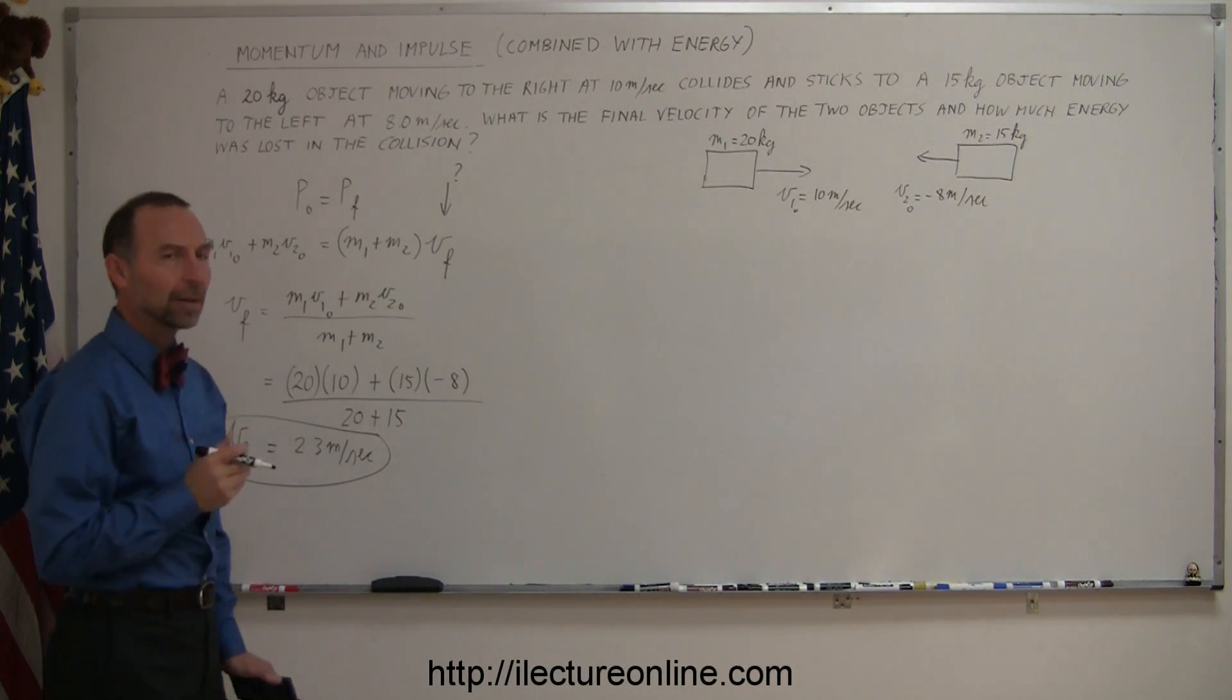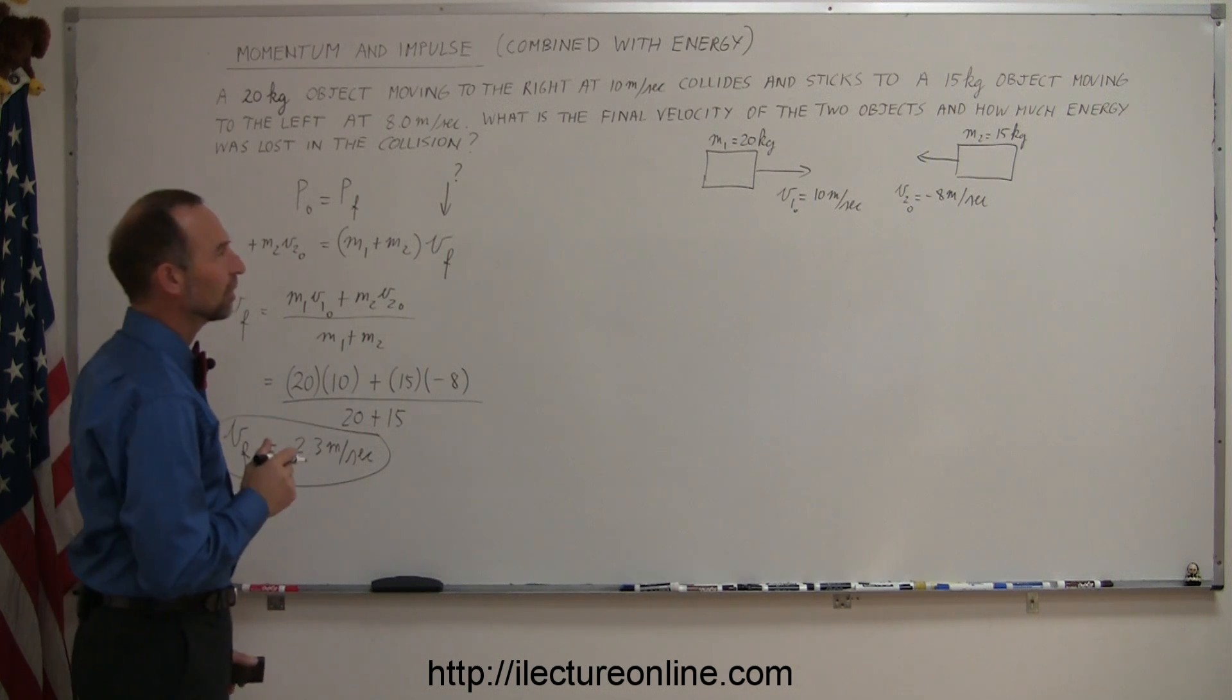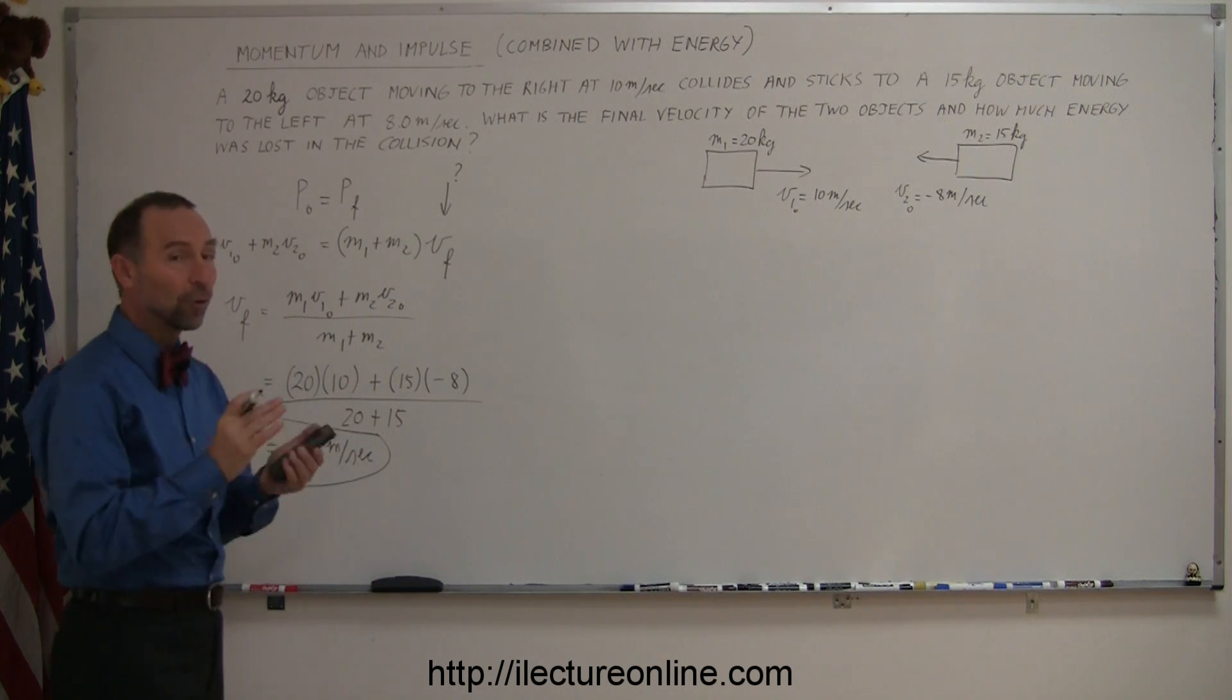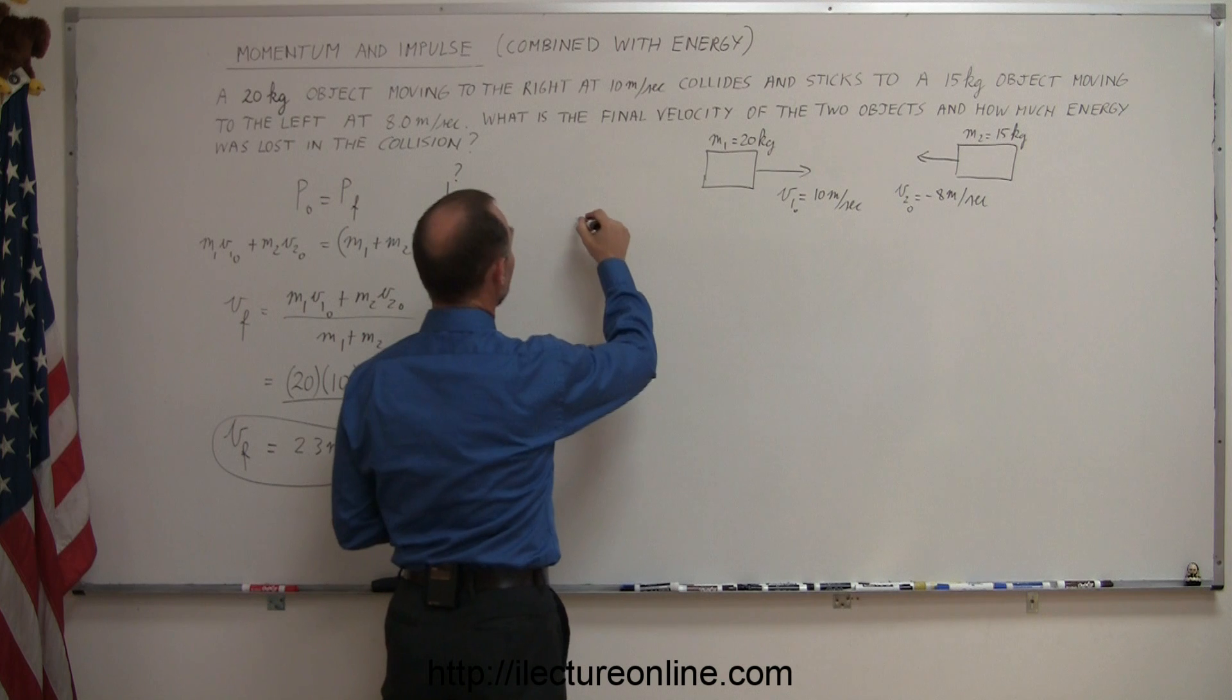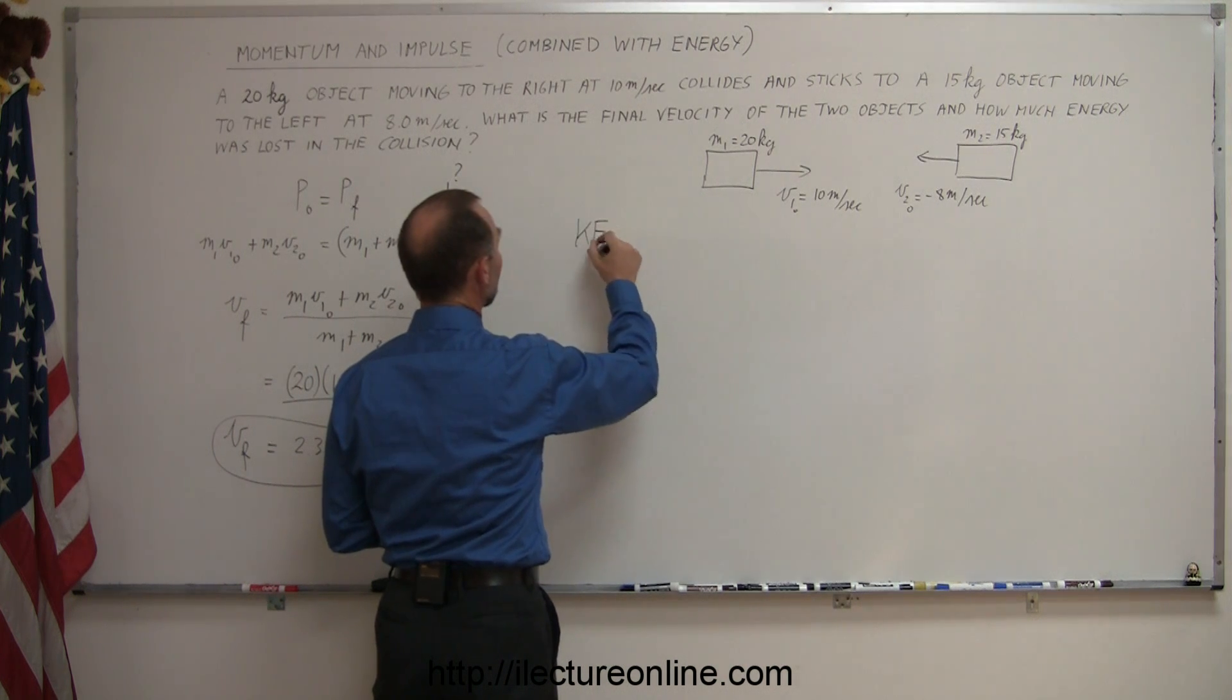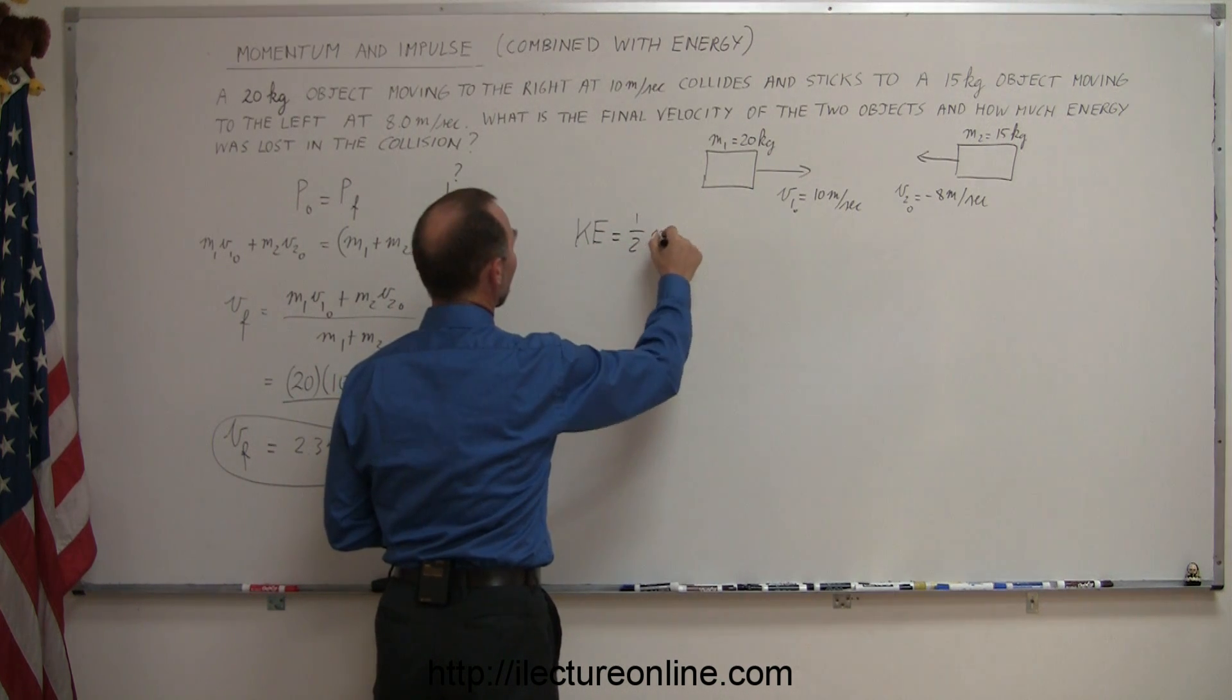But for the second part of the problem, how much energy was lost in the collision? Well, we have to first figure out how much energy the system had before the collision. And remember, the energy in this case will be kinetic energy, and the equation for kinetic energy is equal to one-half mv squared.